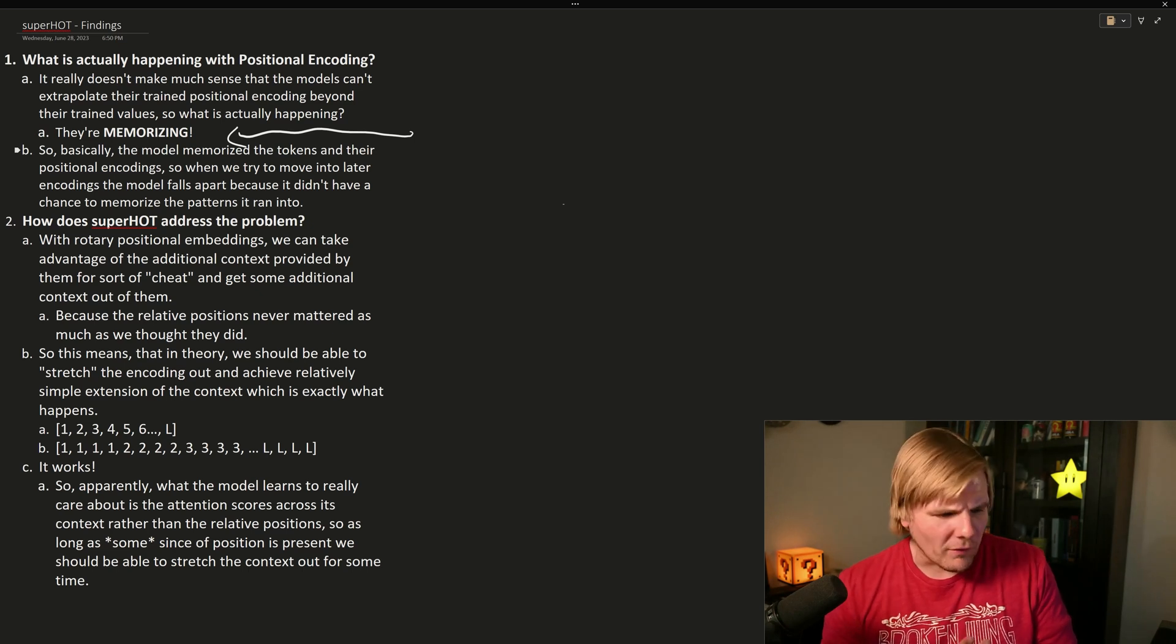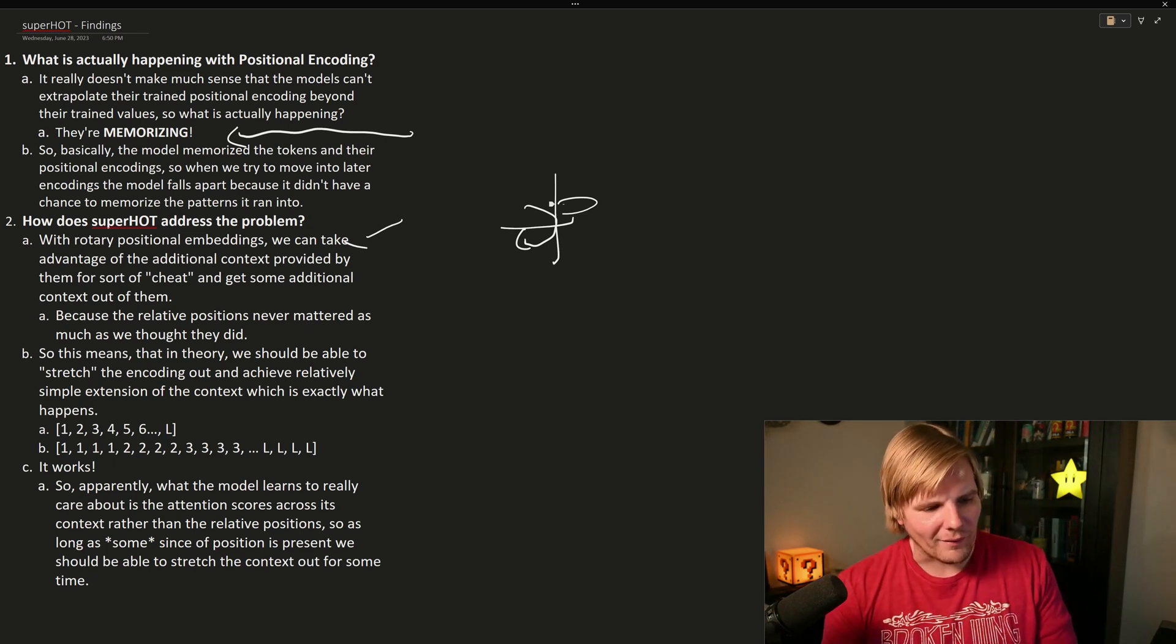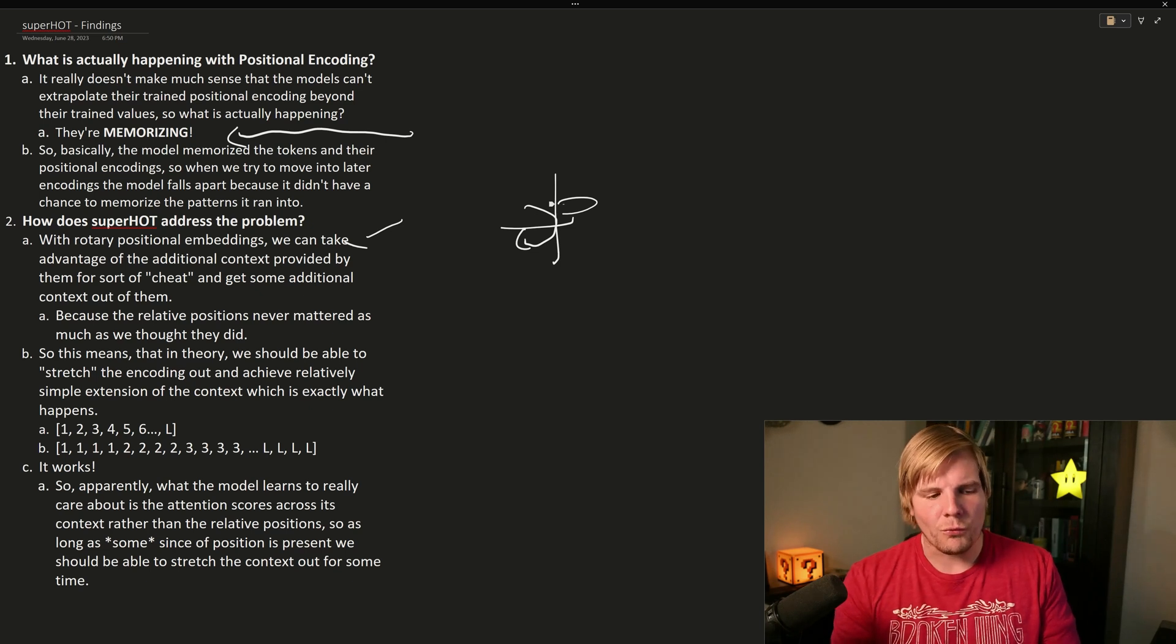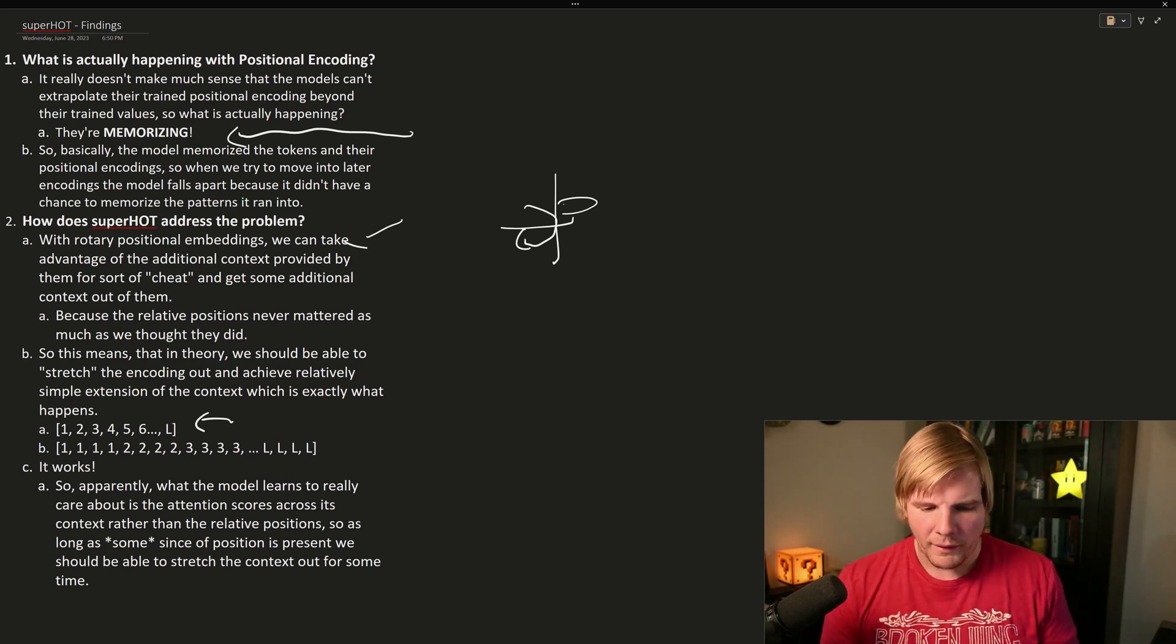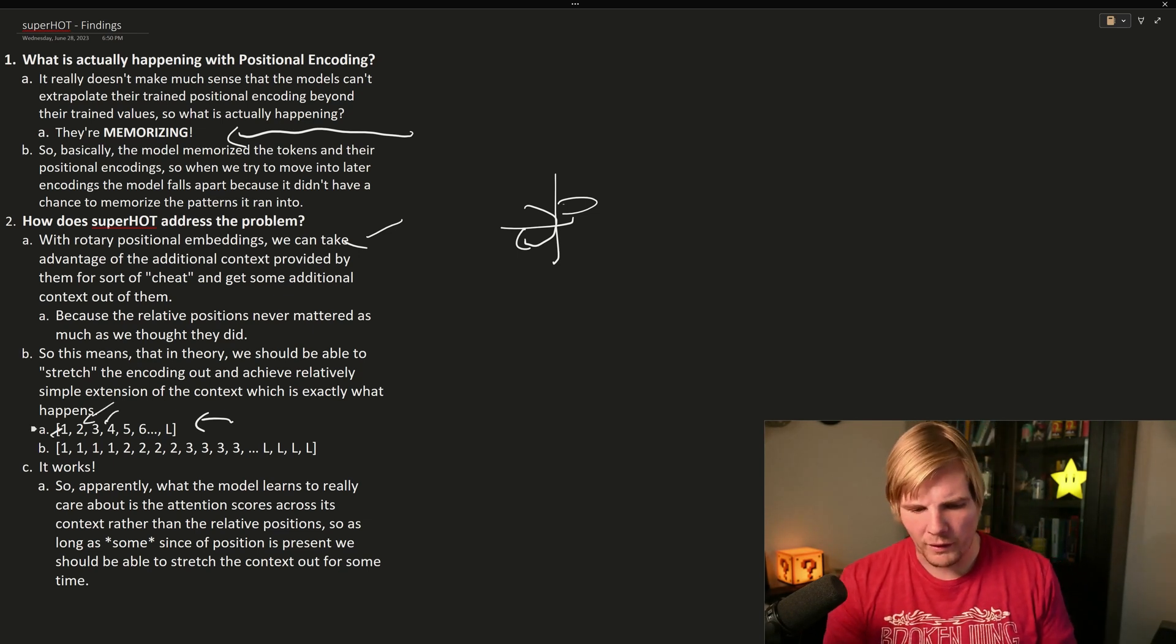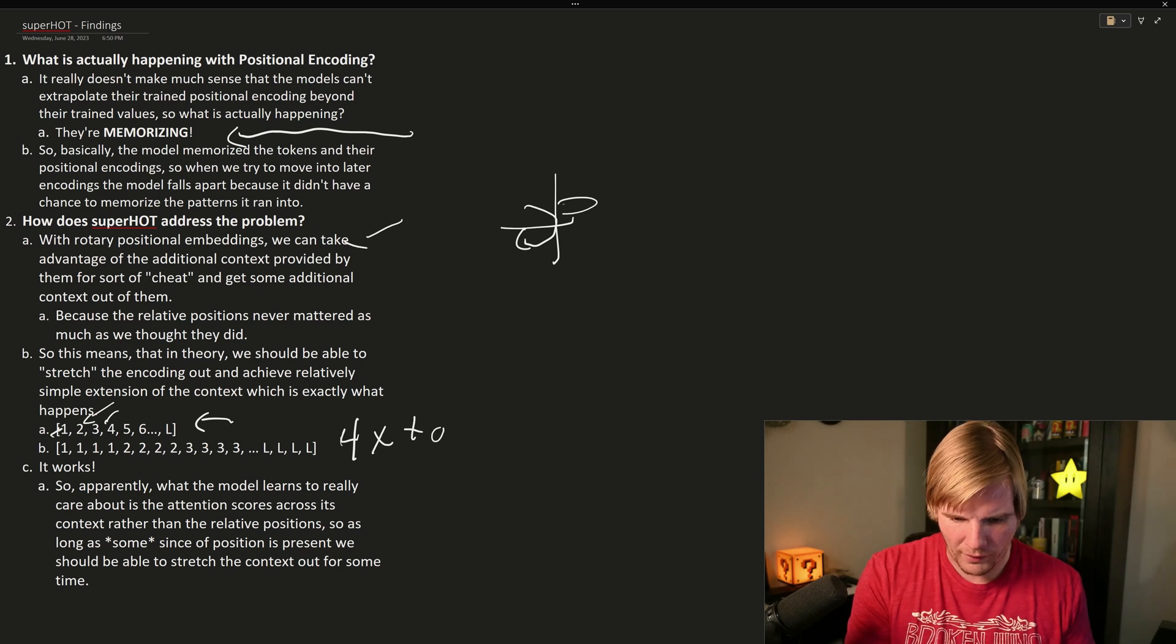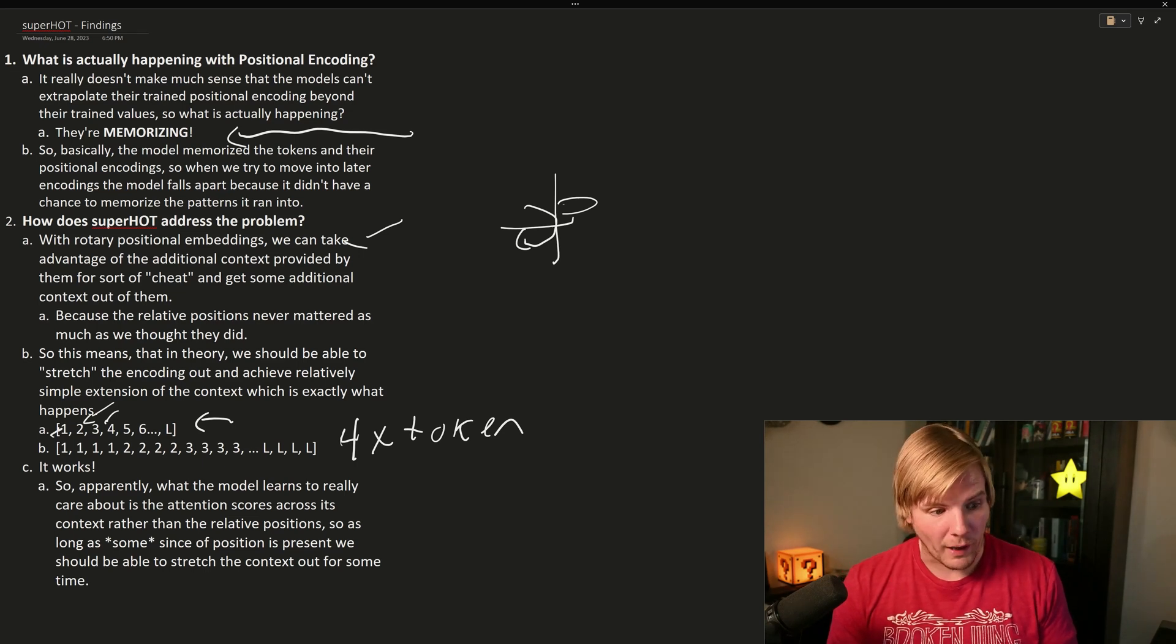And so this means that we can take advantage of our rotary positional embeddings and the additional context that we get from this rotation around these axes to kind of cheat and take advantage of this now to stretch out our encoding. So if we have some token count that we've learned out to, out to say L, and we would embed at position one and at two and three, and this is our positional encoding, what if we just repeated it a few times? So let's say we wanted to have four times our token count. So all we would do is we would repeat the positional encodings four times for each.